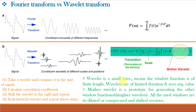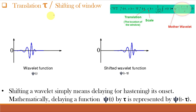A Wavelet is a small wave, meaning the window function is of finite length, so Wavelets are of limited duration and zero average value. The mother Wavelet is a prototype for generating other window functions or daughter Wavelets; all used windows are its dilated or compressed and shifted versions. For the Wavelet Transform, we take the Wavelet, compare it to the start of the signal, calculate the correlation coefficient, shift the Wavelet to the right and repeat, then scale or stretch the Wavelet and repeat. The translation Tau is simply the shifting of the window.